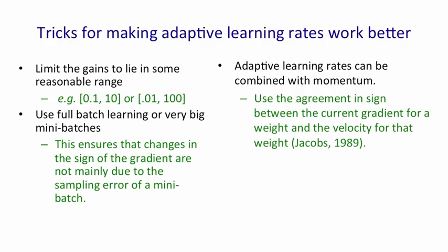There's nothing to prevent you combining adaptive learning rates with momentum. Jacobs suggests that instead of using the agreement in sign between the current gradient and the previous gradient, use the agreement in sign between the current gradient and the velocity for that weight, so the accumulated gradient. If you do that, you get a nice combination of the advantages of momentum and the advantages of adaptive learning rates.